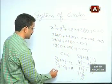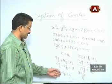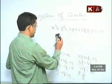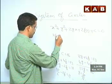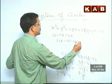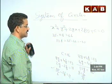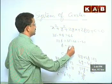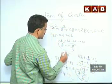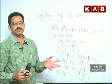Substituting g = 35/12 into the equation: 2 × (35/12) − 2f = 11, which gives 35/6 − 2f = 11. Solving: 35 − 12f = 66, so 12f = 35 − 66 = −31, giving f = −31/12. Now we have f, g, and c, and using them we can find the equation of the circle.